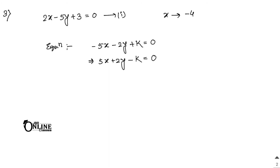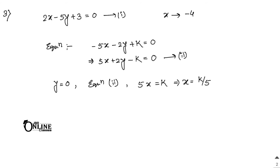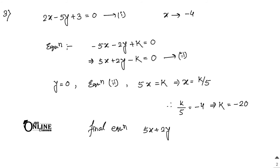Since the x-intercept is -4, that means y = 0. Substituting y = 0 into 5x + 2y - k = 0 gives x = k/5. For the required member with x-intercept -4: k/5 = -4, so k = -20. Substituting back into the equation gives 5x + 2y - (-20) = 0, i.e., 5x + 2y + 20 = 0 as the final answer.